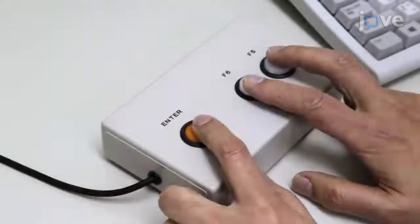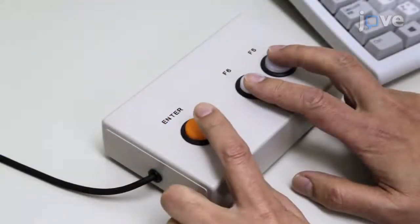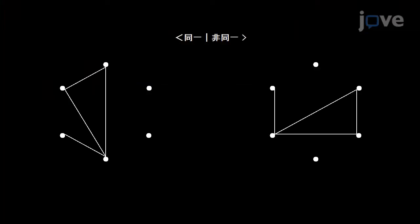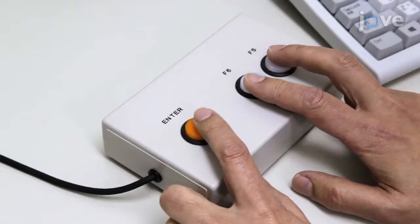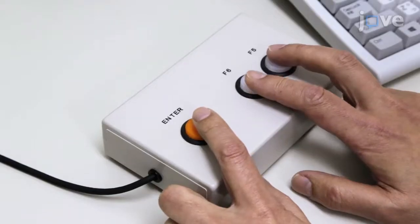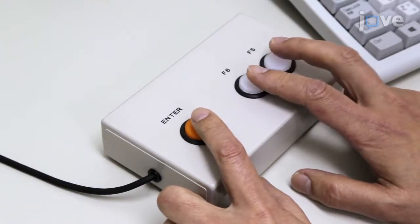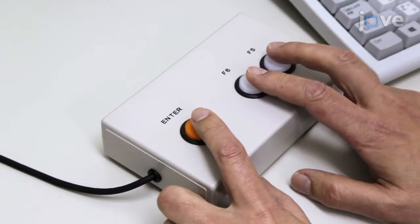By pressing the Enter button, the current screen will proceed to the consecutive screen. The F6 button is for responses using the index finger, and the F5 button is for responses using the middle finger.